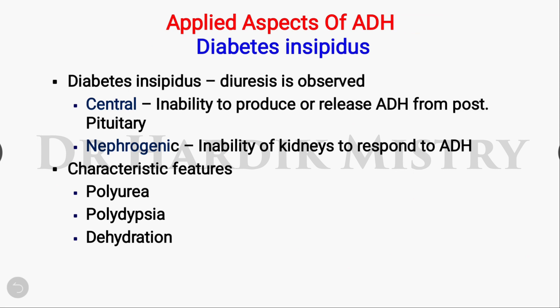The applied aspect of ADH is known as diabetes insipidus. In diabetes insipidus, diuresis is observed in greater quantity than the normal rate, which is the cause of the condition.